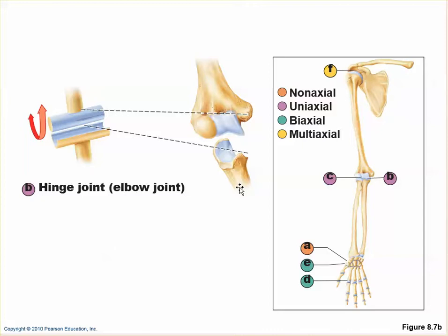There are other joints, such as the knee, that are modified hinge joints allowing certain other motions, but their primary motion is flexion and extension. The elbow is a pure hinge joint. The proximal interphalangeal and distal interphalangeal joints between the phalanges are also hinge joints — they only allow flexion and extension, because one bone forms a trough and the other forms a cylinder that rotates within it.